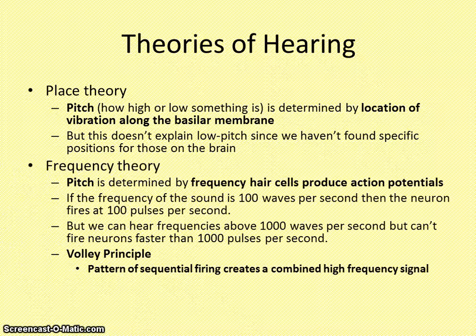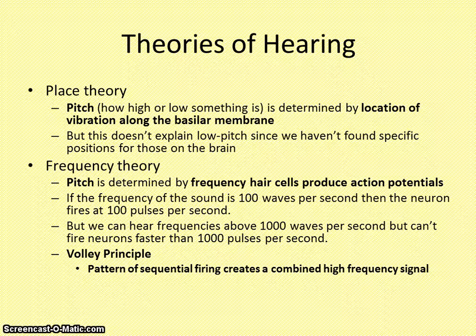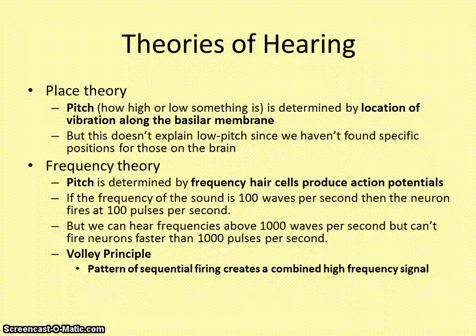The only issue is that place theory does not explain low pitches, since the exact position on the cochlea for those hasn't been clearly established. So in comes the frequency theory, which says that pitch is determined by the frequency of hair cells producing action potentials — the firing of neurons. The cochlea vibrates at the same rate as the sound wave, so if a wave comes in at 100 waves per second, 100 pulses per second travel to the auditory nerve. The volley principle, part of frequency theory, says that the pattern of sequential firing creates a combined high-frequency signal — like volleying back and forth.